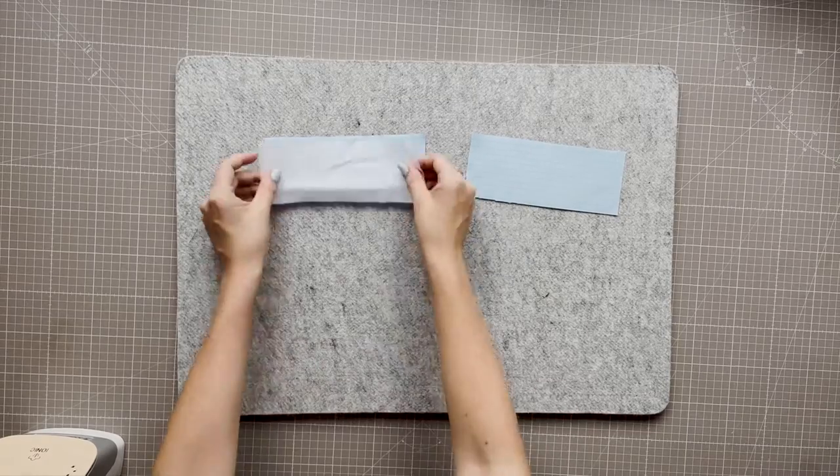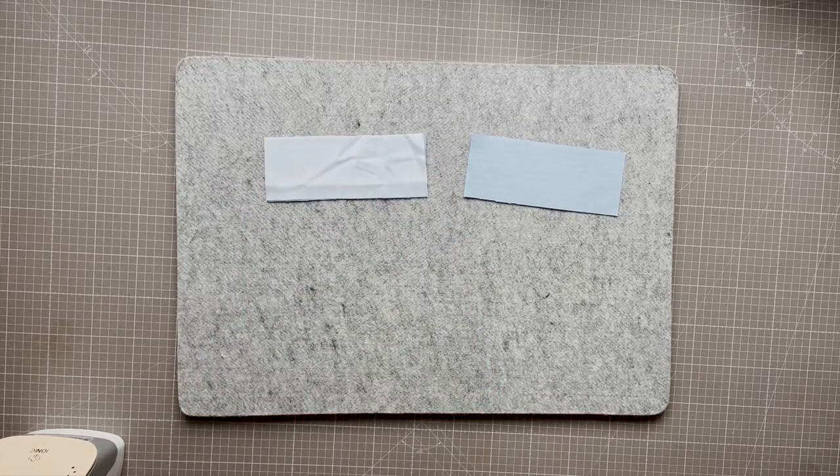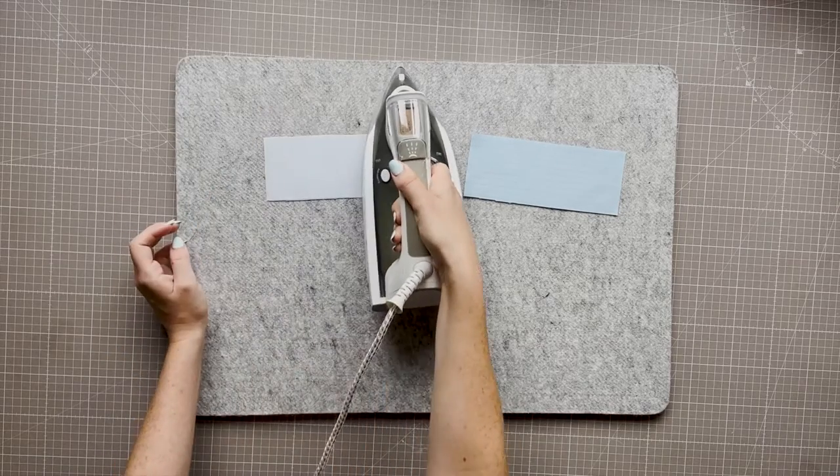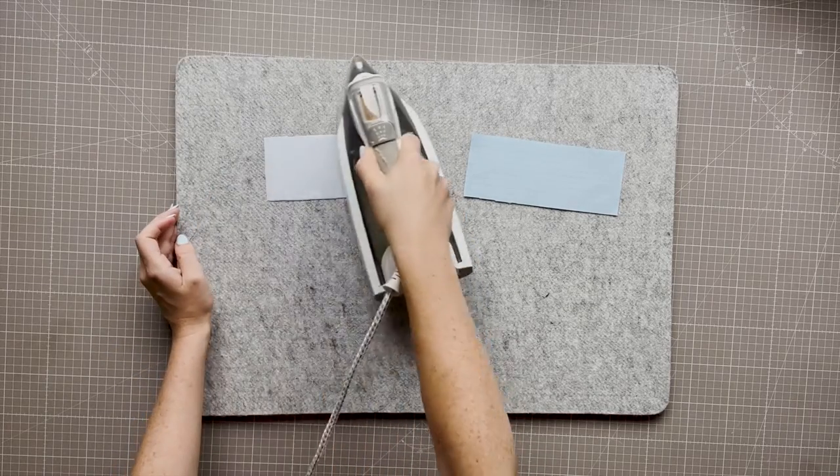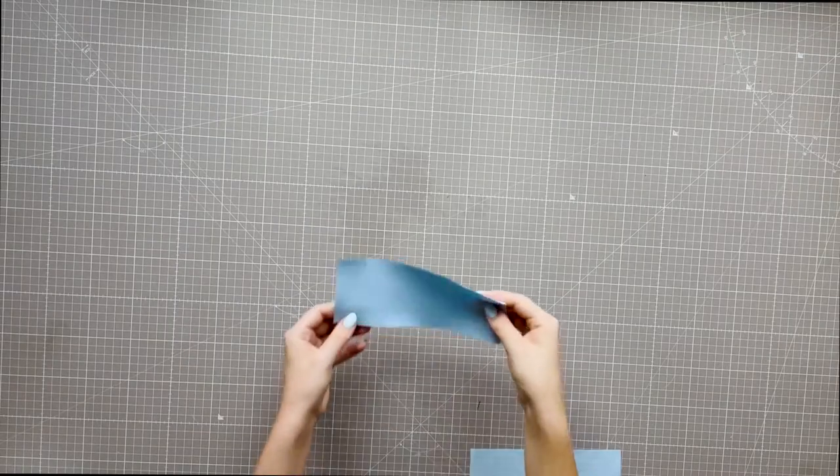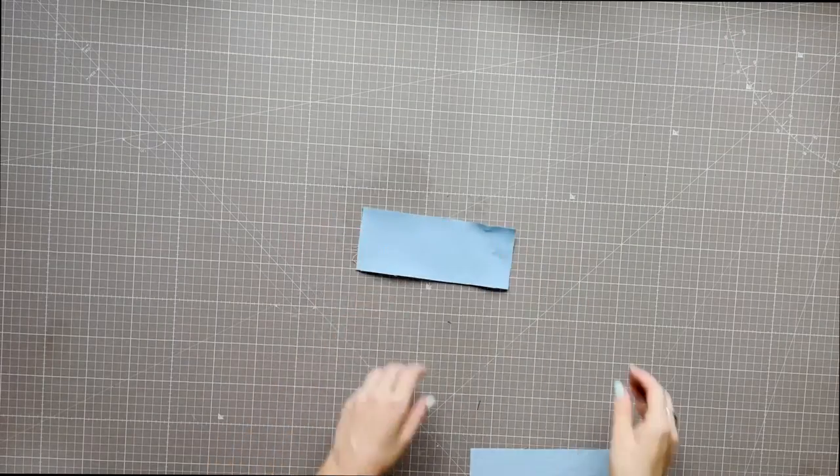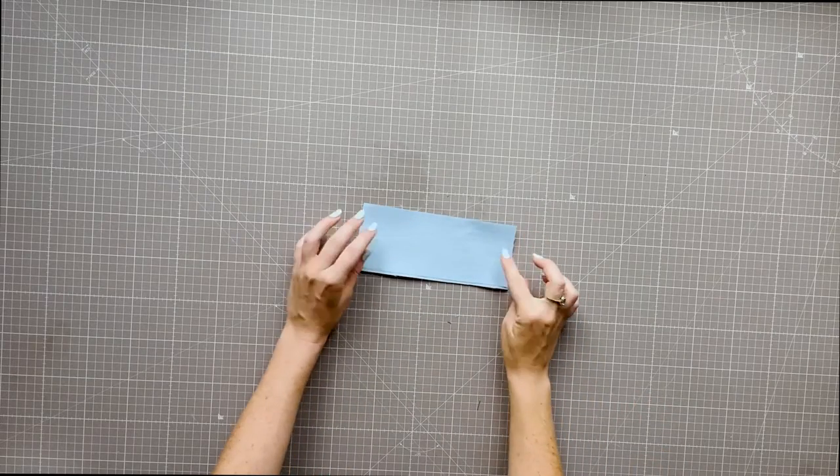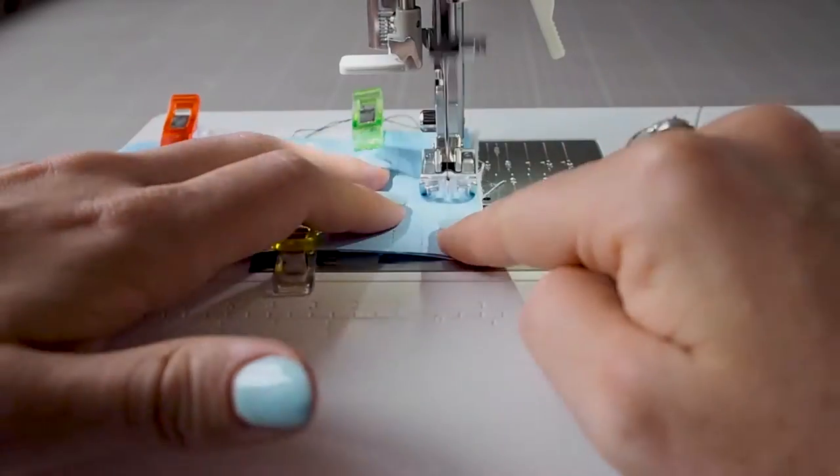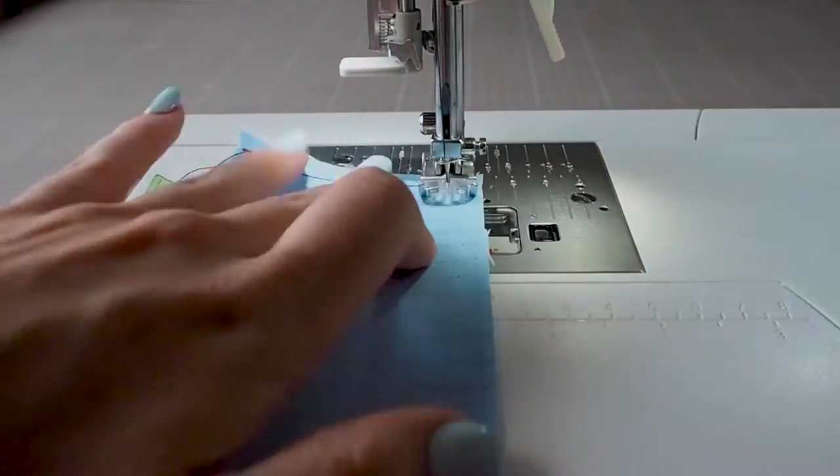The flaps are made by two identical rectangles slightly wider than the end pocket dimension. Interface one of these. This is going to be the outer pocket flap, the one visible when the garment is sewn. Attach the two together, right sides together and sew along the three edges at one centimetre seam allowance. Leave the top long edge open.